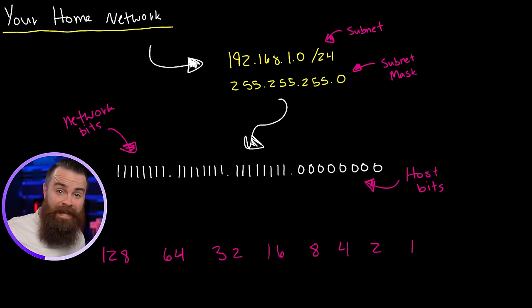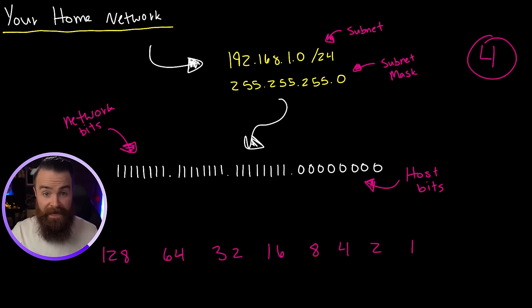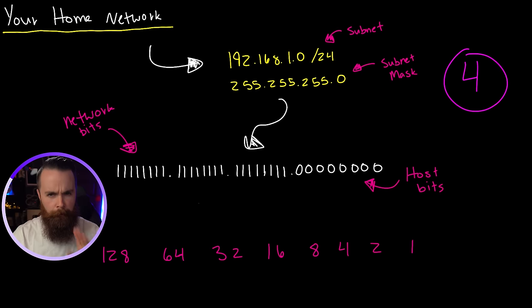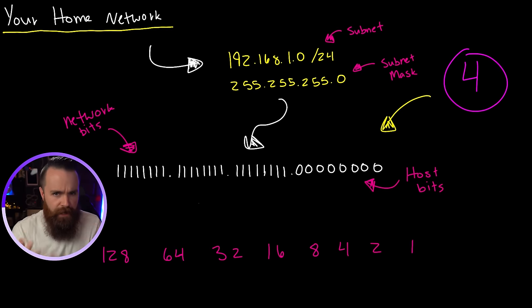Here is our mission: we have to manipulate the subnet mask, change it, and break it into four networks. And here is the secret — when we need more networks, we need to hack the host bits. We've got to flip them, bring them over to the dark side of the network bits. When you need more networks, you need more bits, and the only way to get more bits is by stealing them from the host bits. But how many host bits do we need to create four networks?